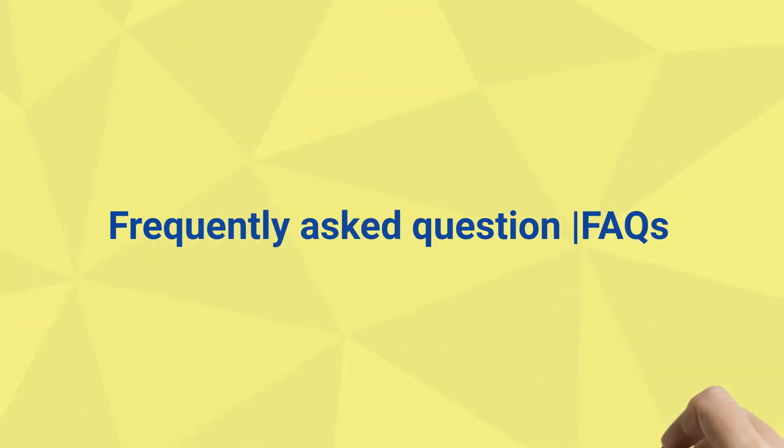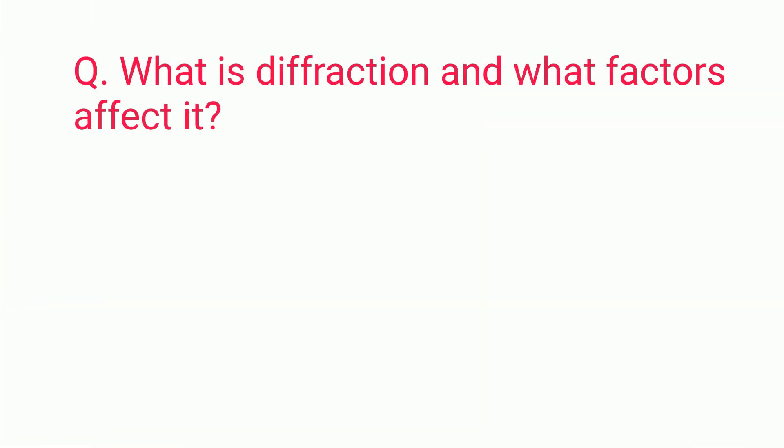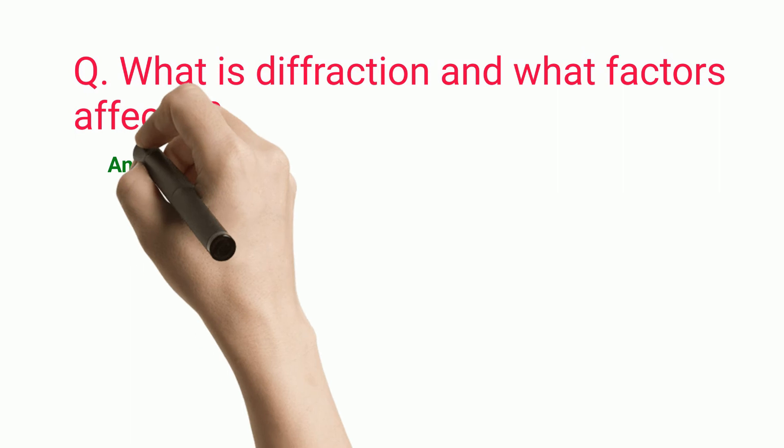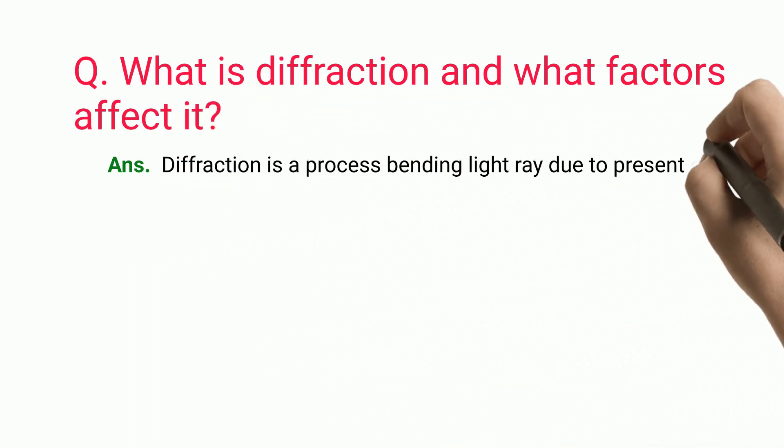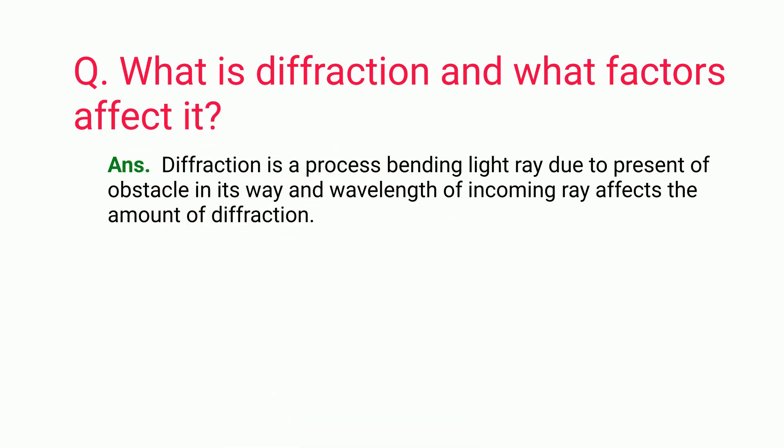Frequently asked questions. Question: What is diffraction and what factors affect it? Answer: Diffraction is a process bending light ray due to presence of obstacle in its way, and wavelength of incoming ray affects the amount of diffraction.